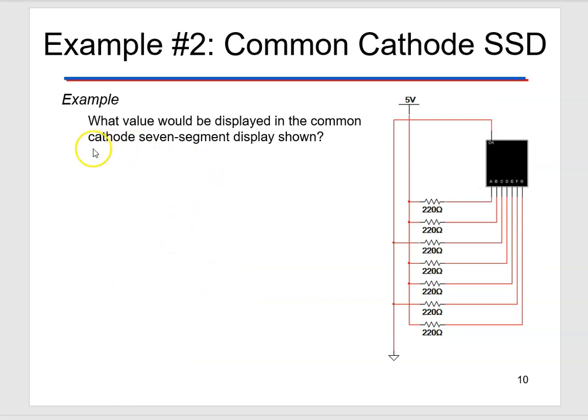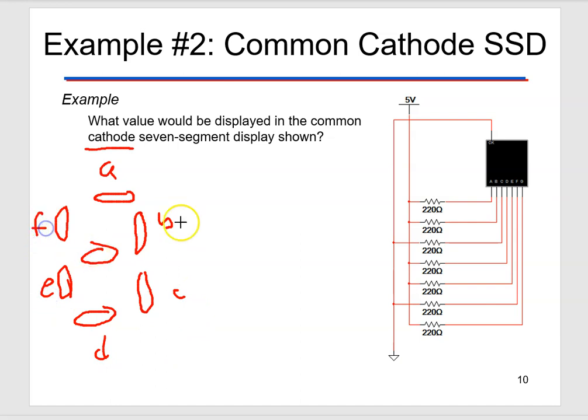And this one, the second example, it's a common cathode. So now we're really looking for which ones are connected to the VCC of the power. So I'm going to go ahead and label, draw these out, A, B, C, D, E, F, and G in the middle.